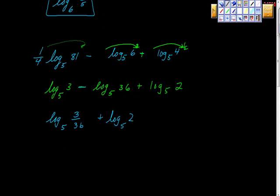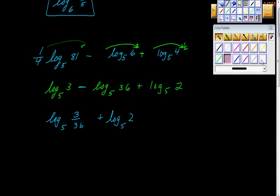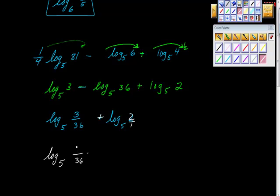So what we're going to look at now is we're going to look at the first property, and that's the product property. This addition sign right here tells us that we have multiplication. So what we have is log base 5 of 3 over 36 times 2, this 2 right here, times 2. And 2 times 3 is 6, and 6 over 36 is 1 sixth. So our final condensed version of this will be log base 5 of 1 sixth.